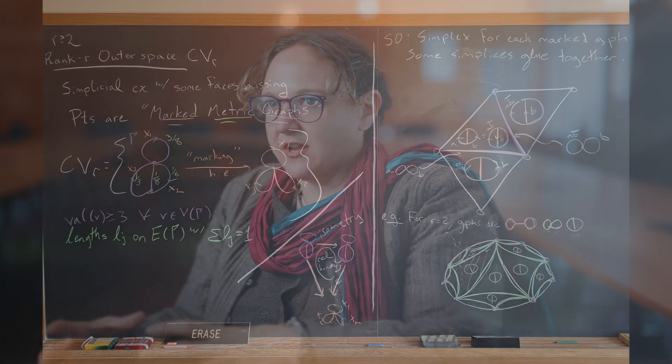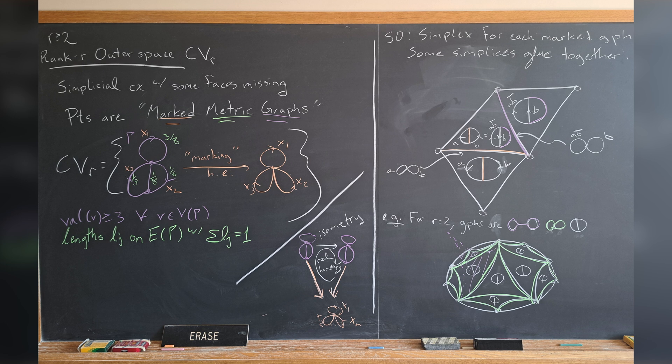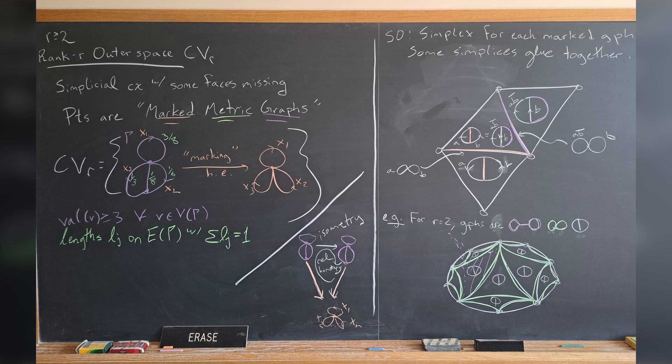Then you piece those together, and somehow by looking at whether you've pieced together the right triangles or the right dimensions in the right ways, the symmetries of that object can be something like a group that you like. That abstract algebraic object is actually the collection of symmetries of this thing made out of triangles. This is something that geometric group theorists like myself like to do.